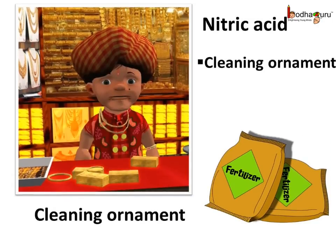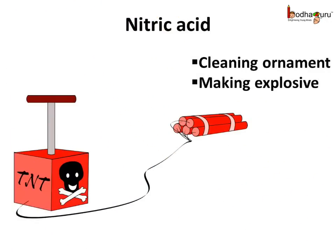Nitric acid is another common mineral acid. As we have learned, it is used to make fertilizers. It is also used by goldsmiths to clean gold and silver ornaments. Nitric acid is heavily used in making explosives like TNT and nitroglycerin, which are used in construction of dams, canals, or in different mineral mines.